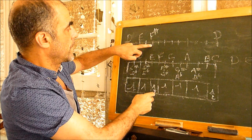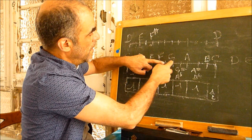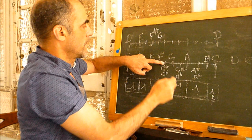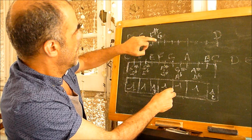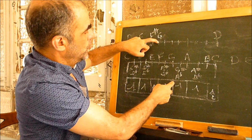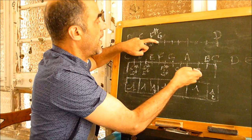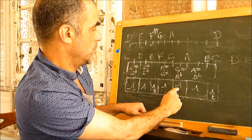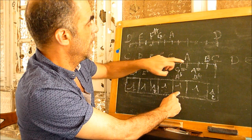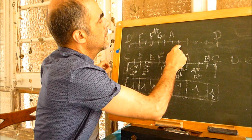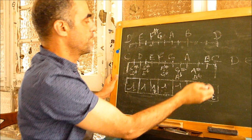Then we add one half tone from F sharp and we arrive at G, so the next note is G. Then we have two half tones again: from G, one half tone would be G sharp, and one more half tone brings us to A. From A, one half tone is A sharp, and one more half tone brings us to B.